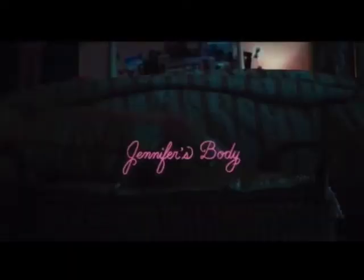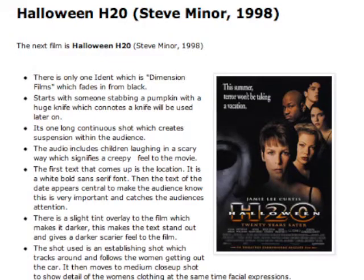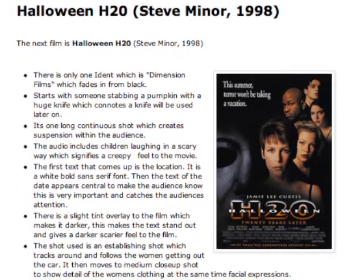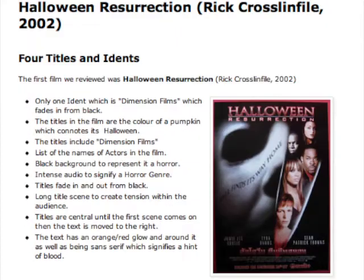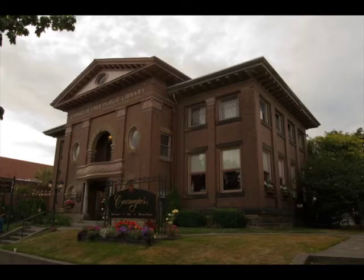Usually the shots used are an establishing shot or an extreme wide shot, to give the audience an exposition of the film — for example, the scenery can slightly signify what is going on. With idents, they usually appear at the beginning of a film and include the studio logo accompanied by non-diegetic sound. They are usually not longer than 15 seconds, depending on the budget of the film — the more producers, the more idents the film will have.